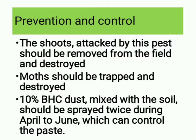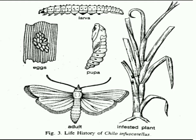Prevention and control of this pest: the shoot attacked by this pest should be removed from the field and destroyed. Moths should be trapped and destroyed. Ten percent BHC dust mixed with soil should be sprayed twice during April to June, which can control the pest. This is the picture of the life history of Chilo infuscatellus — please take a screenshot. Always try to draw a proper diagram with your answer, which will help you to carry better marks in your exam.